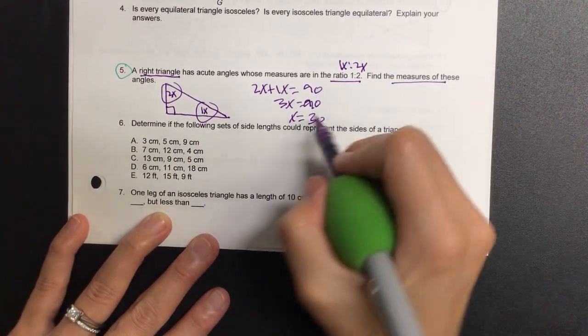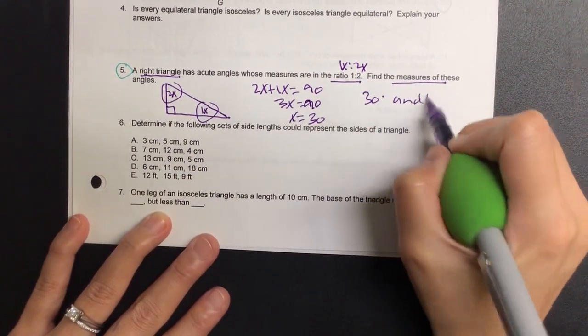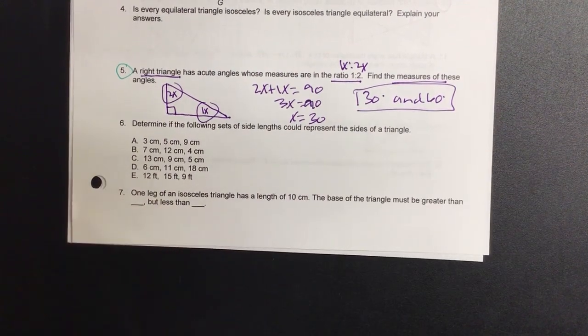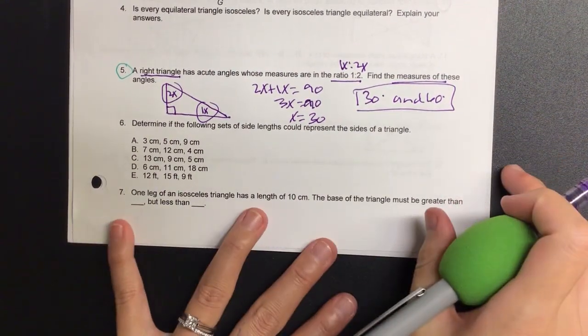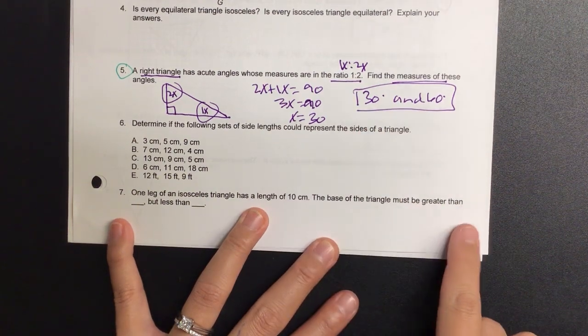It says to find the measures of these. So if I have 30 on one of them, the other one's double that. Must be 60. Voila. Okay. Are we good with this one? Okay, let's go on to the back.